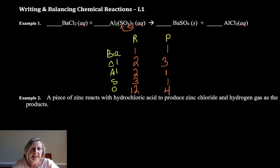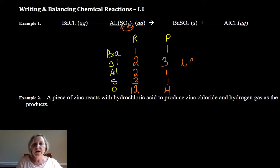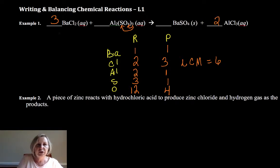Where you start is somewhat random — I'll often just go left to right. I've got one barium and one barium, so I don't have to worry about that. I need to get the chlorines balanced. The lowest common multiple of two and three is six, so I have to multiply the side with two by three, and the side with three by two. Now I have three times two is six, and two times three is six.